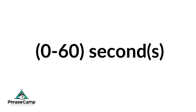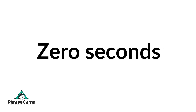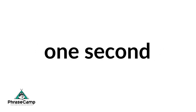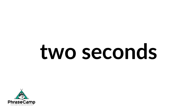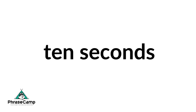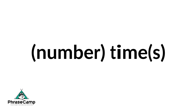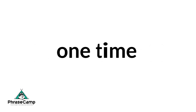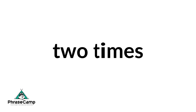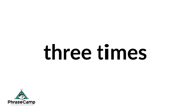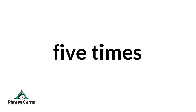Next, add zero to sixty — second or seconds. So zero seconds, one second, two seconds, three seconds, four seconds, 10 seconds, 30 seconds, and so on. Next, add the number and then add times. For example, one time, two times, three times, four times, five times, and so on.